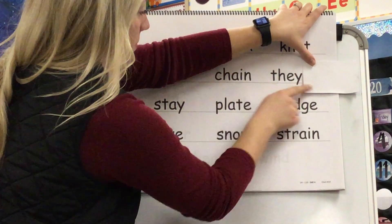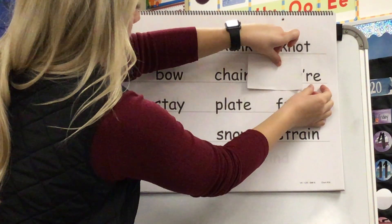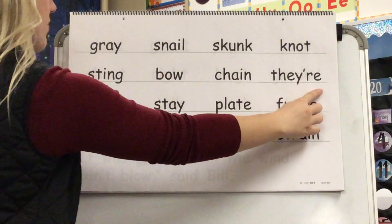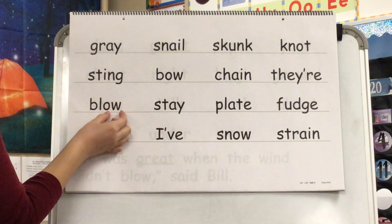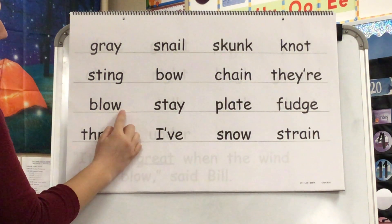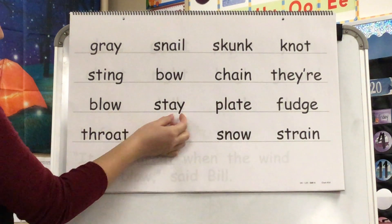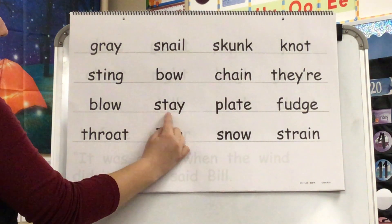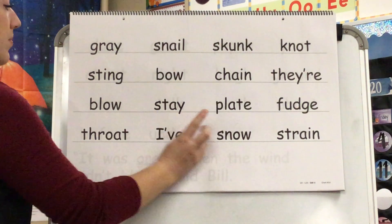They. Sound? R. Contraction? There. Yes, there. Sound? O. Blend? Bl-o. Word? Blow. Sound? A. Blend? St-a. Word? Stay.